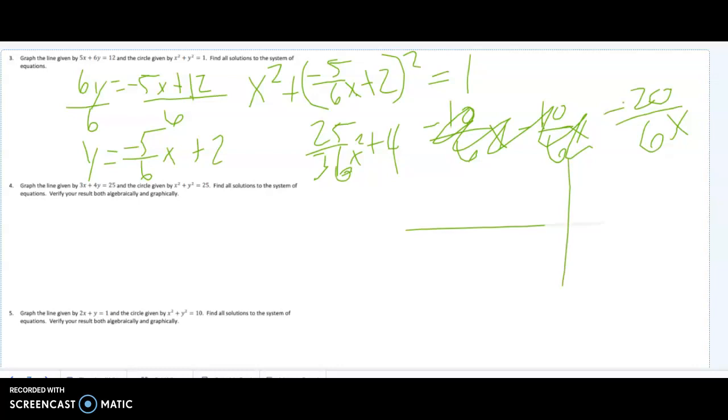Let me draw it over here. So I know my line has to pass through 2, and it's a negative 5/6, so it's going to look something like this. This would be 1, 1, 1, and 1, and this would be right at 2. And my circle is only going to look like this, so this is going to be no solution. My line does not touch my circle.